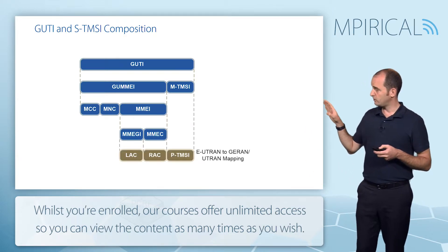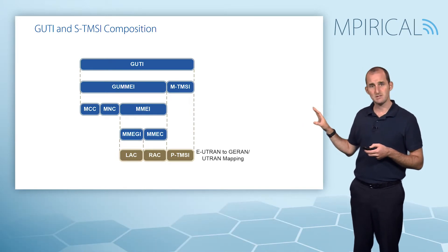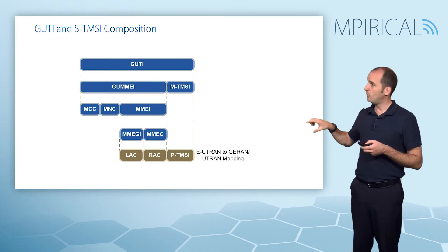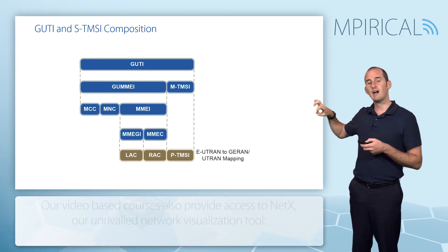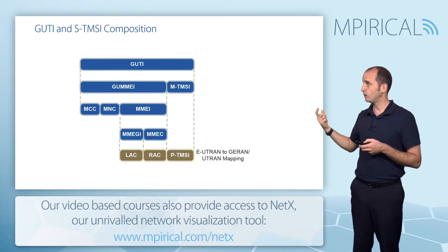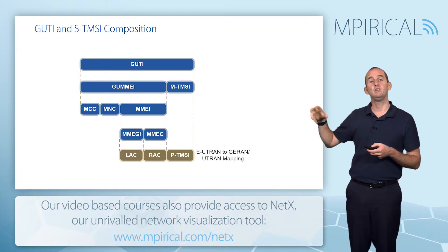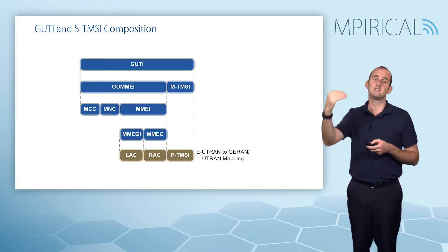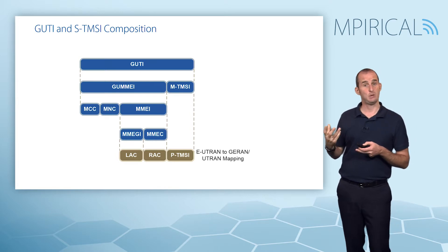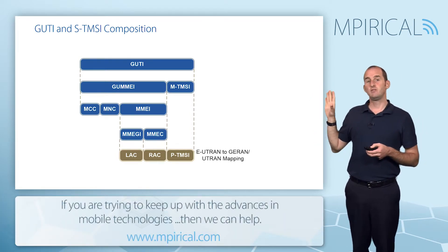In order to map E-UTRAN to UTRAN, the packet TMSI is mapped to the M-TMSI, and we use the location area code and routing area code to map to the group ID and the code of the MME. So by using that mapping process, we can use that packet TMSI when we enter the LTE network coming from GPRS. That is the composition of the GUTI.